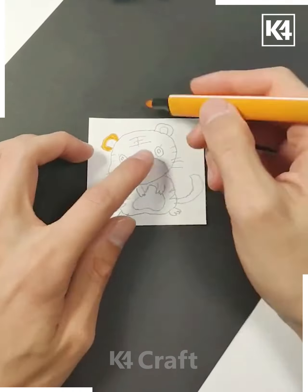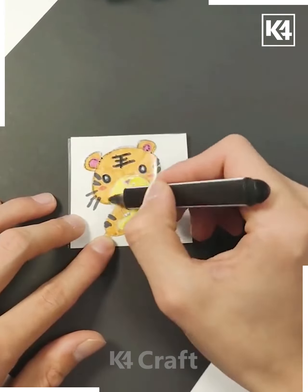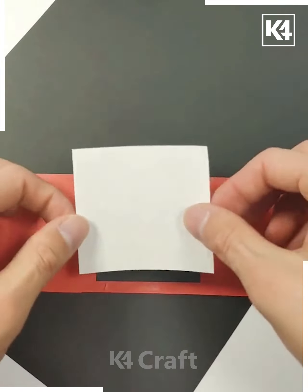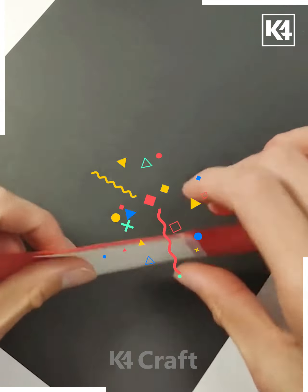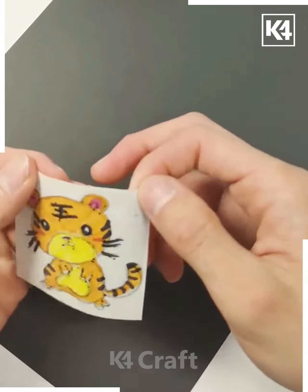Let's move ahead. Here we've drawn a tiger, covering it with transparent paper and highlighting it with black marker. Then we are pasting paper on a red sheet and folding it. After that, paste the tiger on it and it's ready.